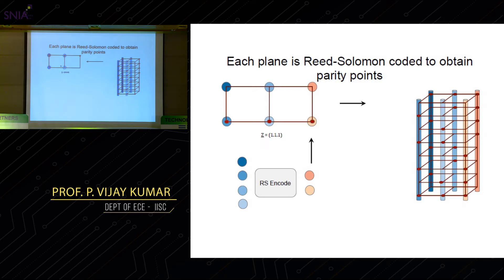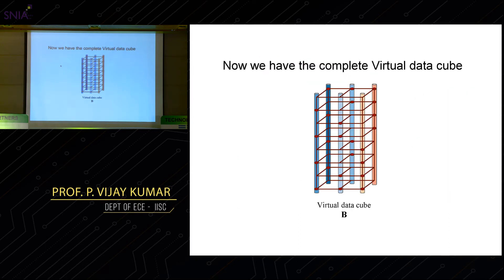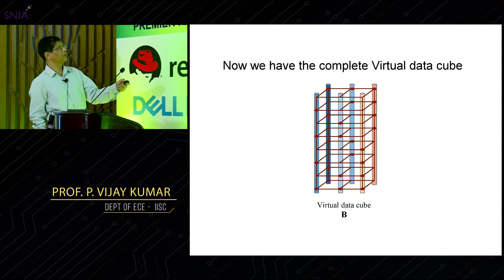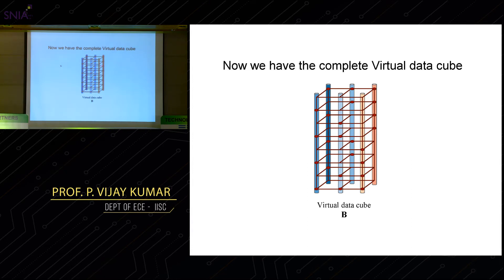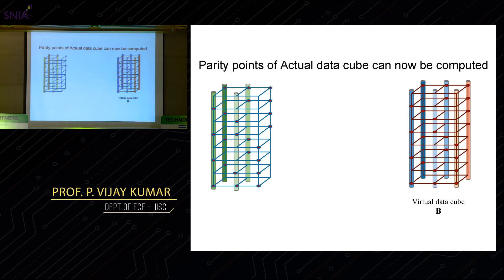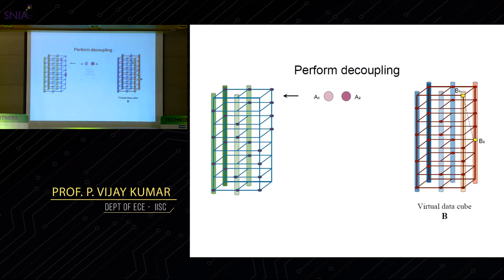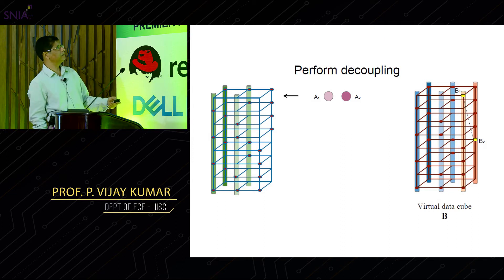Now you go back from B to A. As you might expect, since you coupled to go from A to B, to go back you decouple. For the two parity columns, you apply the inverse coupling transform from B to fill in the actual parity storage nodes. With this you are done — the encode is complete. The key point is that even if this were just layered Reed-Solomon codes, you would still do the layer-by-layer encoding. What is different is the coupling step, and experiments show the coupling transformations do not take up much time, so overhead is minimal.